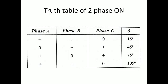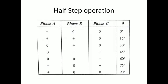Both single-phase on and two-phase on come under full step. The third mode is half-step operation. For a 30-degree step angle motor, half step means reducing the step to half — which is 15 degrees. This is possible by merging the two previous operations: one-phase on and two-phase on.